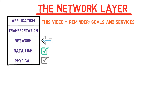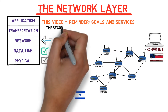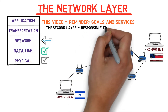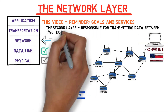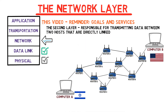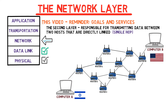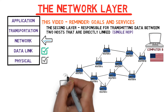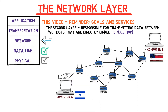So let us look at our network diagram once more. As we've said over and over again, the second layer is responsible for transmitting data between two hosts that are directly linked — in other words, devices linked via a single hop. So the second layer is responsible for the connection between Computer A and Router 1, and the same applies for each connection between two directly linked devices.